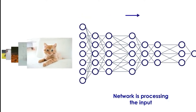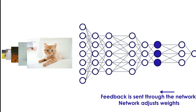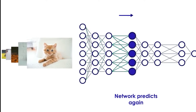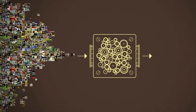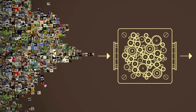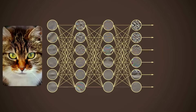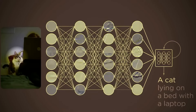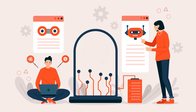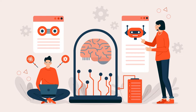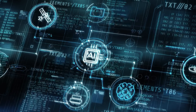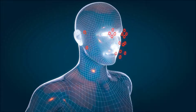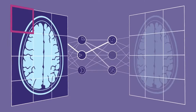During training, the network adjusts the connections between neurons to get better at recognizing cats — it learns from its mistakes, gradually improving its ability to distinguish between cat and non-cat images. Once the network is trained, you can show it new pictures and it will tell you whether it thinks they contain a cat or not, based on what it learned during training. In simple terms, a neural network is like a virtual brain that can learn to recognize patterns and make decisions, just like we do. It's a powerful tool used in many AI applications, from image and speech recognition to self-driving cars and medical diagnosis.